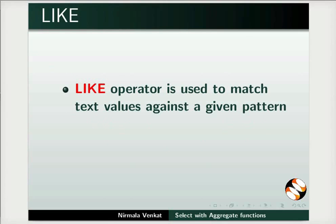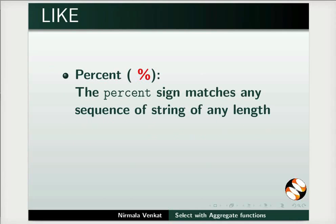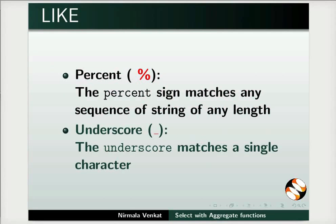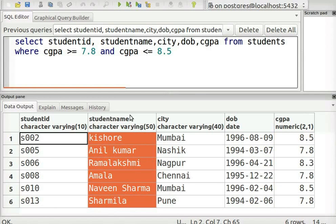Next, we will learn about the like operator. The like operator is used to match text values against a given pattern; it allows wildcard characters to be used. There are two wildcards: the percent sign, which matches any sequence of string of any length, and the underscore, which matches a single character. Suppose I don't remember the exact name of a student, but I remember that the student's name begins with the letters RA.